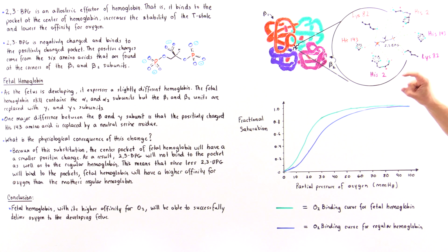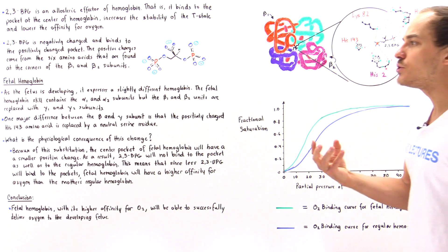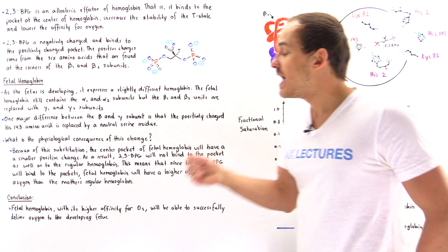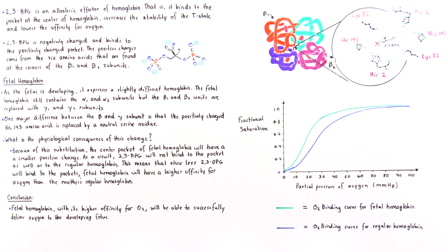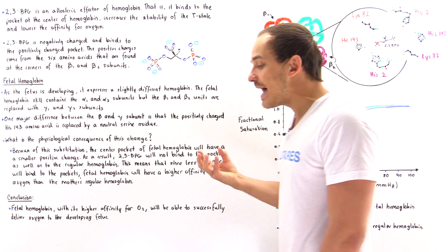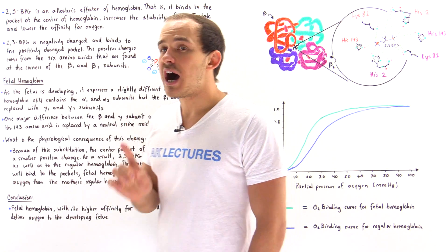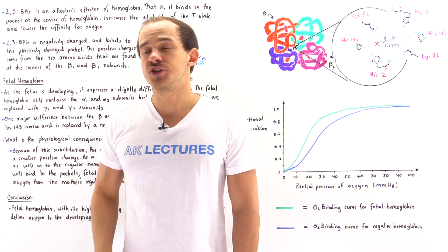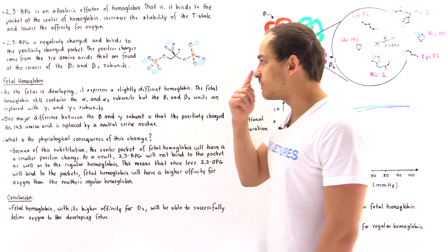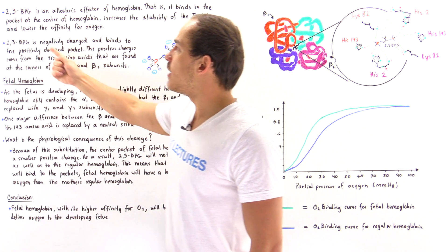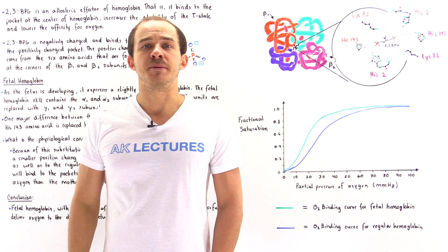The fetal hemoglobin at the same partial pressure will be able to bind more oxygen than that mother's normal hemoglobin. That's important because we have to have an effective method by which that fetus actually obtains the oxygen from the mother's blood. This is one more important physiological consequence of this molecule 2,3-BPG.